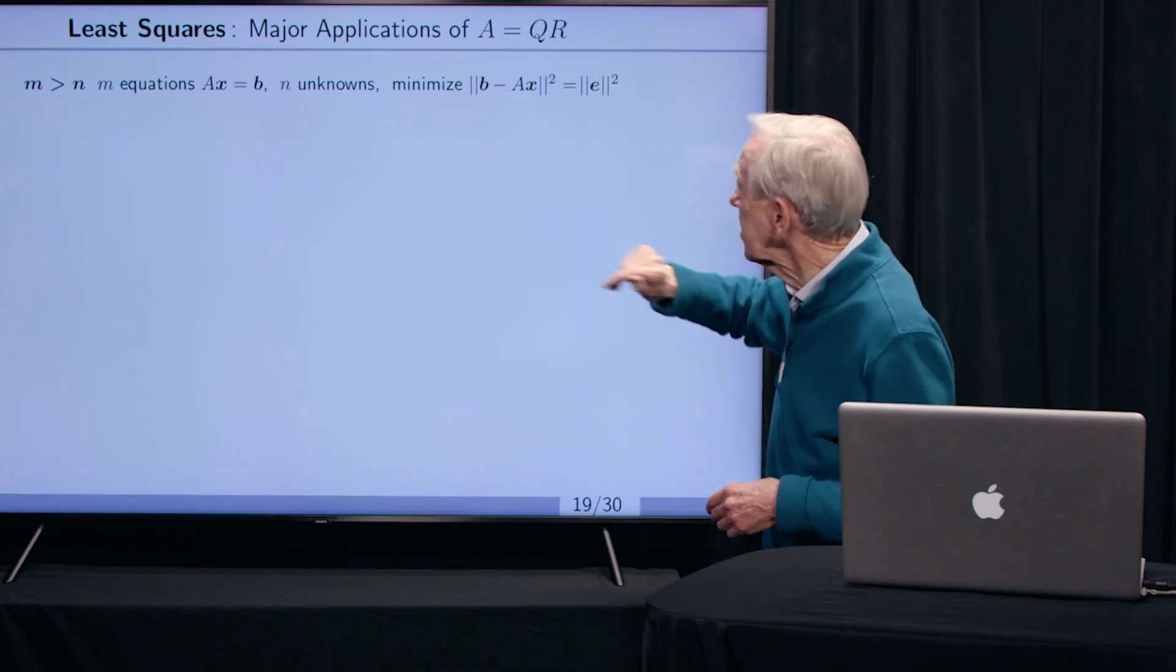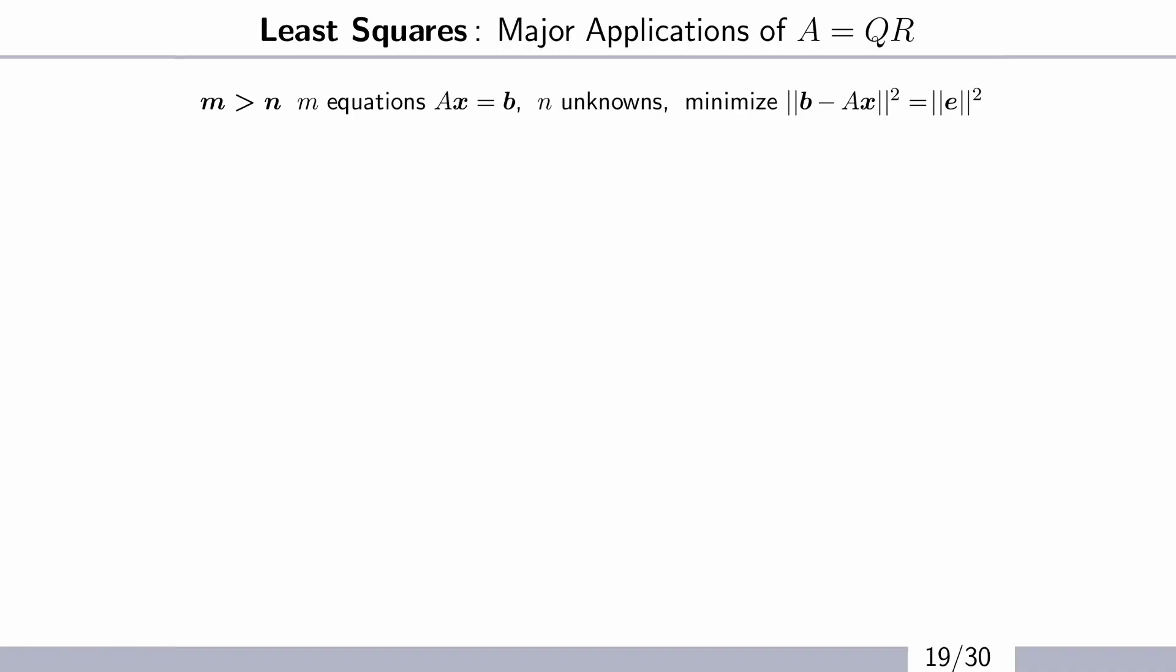And here's a place that Q fits. This is like the first big application of linear algebra. So let me just say what it is, and it uses these Qs. What's the application? It's called least squares. And you start with equations Ax equal B. You always think of that as a matrix times the unknown vector being a known right-hand side B, Ax equal B.